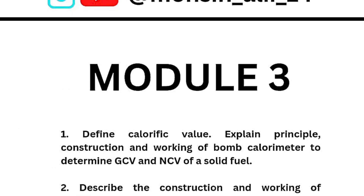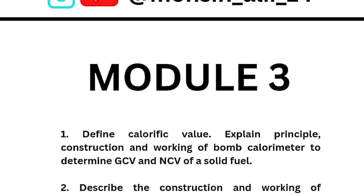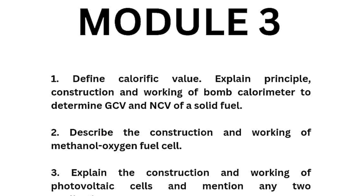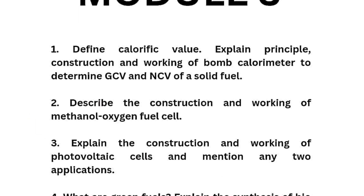Sorry — the next section is module 1, not module 3; it is just a typing mistake. These questions are from module 1. In module 1, the scoring questions are: First, define calorific value and explain the principle, construction, and working of bomb calorimeter to determine GCV and NCV of a solid fuel. Second, describe the construction and working of methanol-oxygen fuel cell.